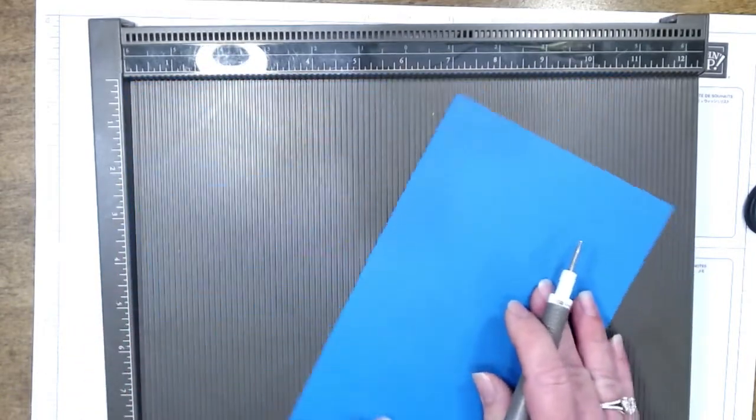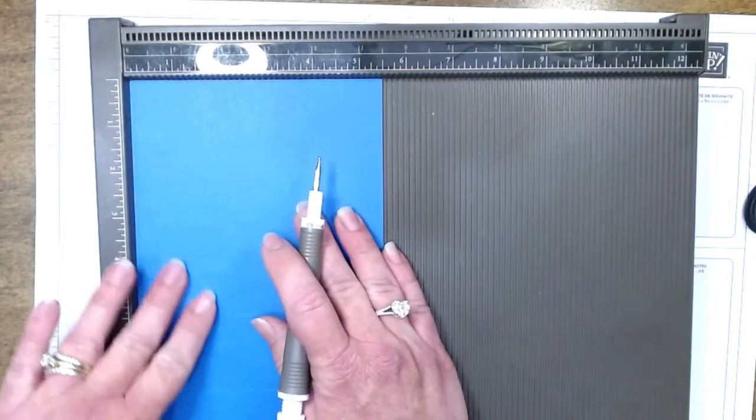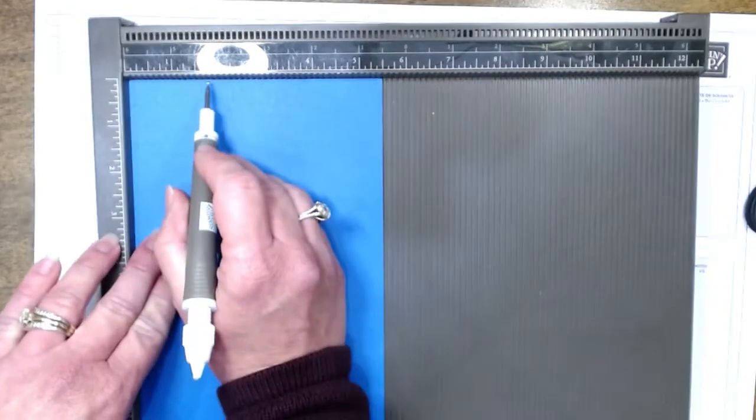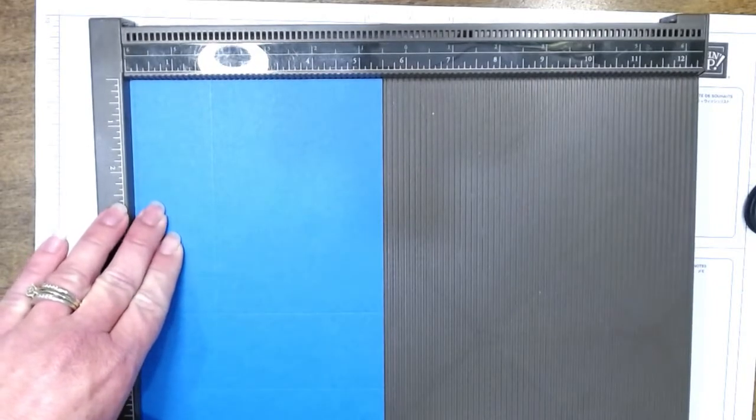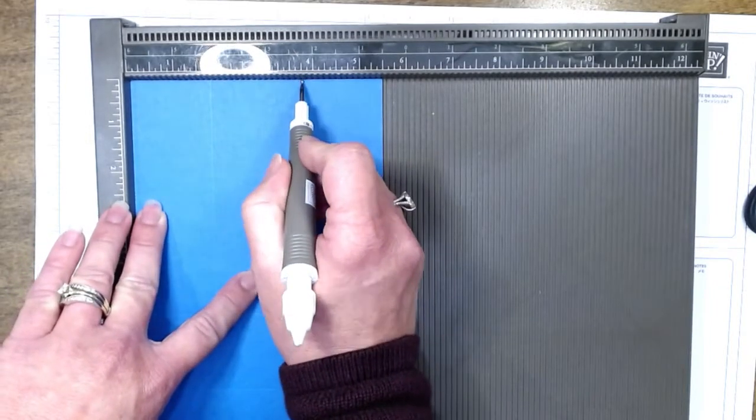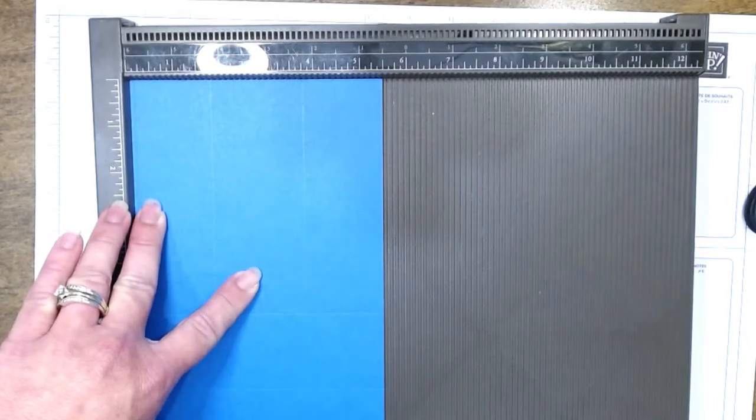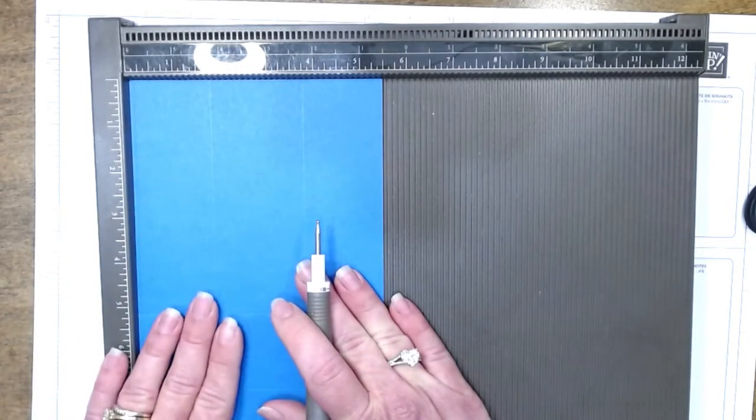Now we're going to rotate it. So now we have the five and a half inch side up at the top. We're going to score it at one and three-fourths and three and three-fourths.